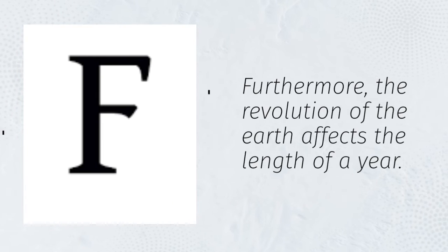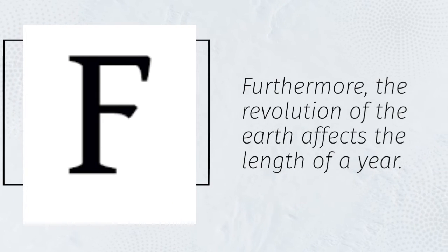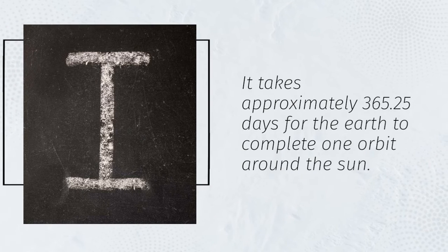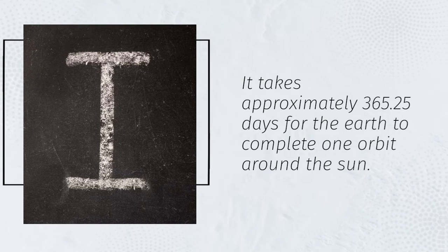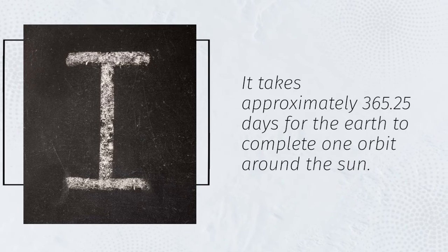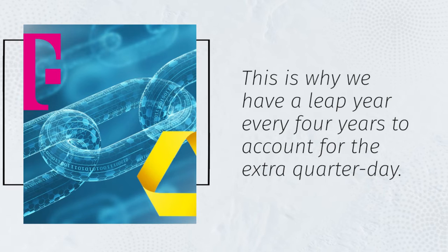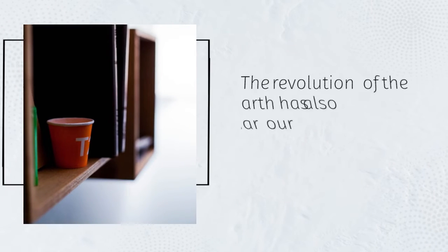Furthermore, the revolution of the Earth affects the length of a year. It takes approximately 365.25 days for the Earth to complete one orbit around the Sun. This is why we have a leap year every four years to account for the extra quarter day.